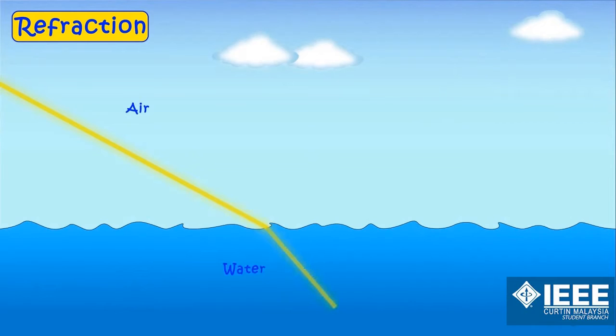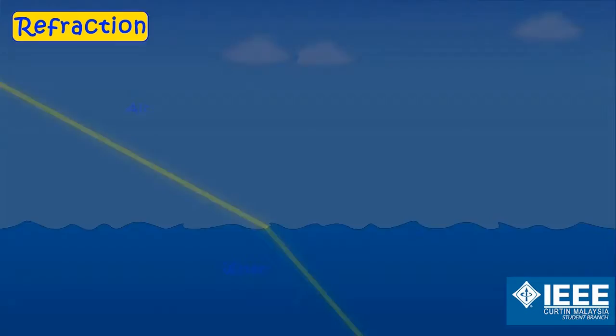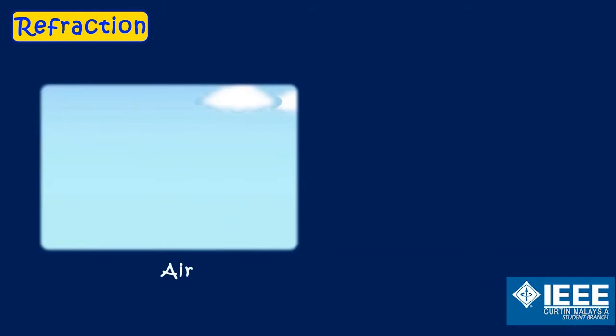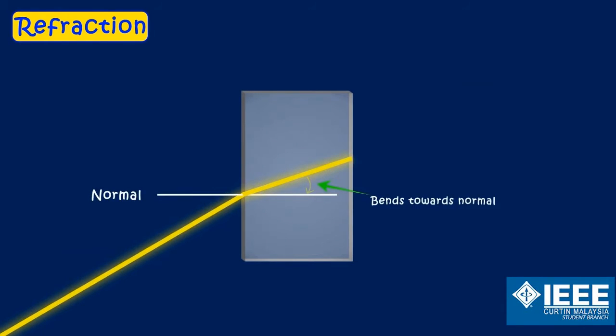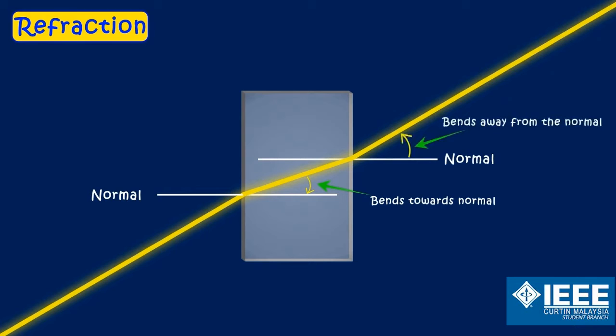Medium of air is less dense than the medium of prism. When light enters denser medium, it bends towards the normal. And when light enters the thinner medium, or less dense medium, it bends away from the normal.